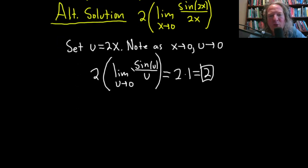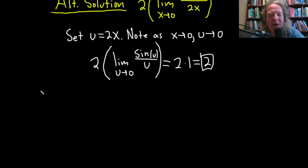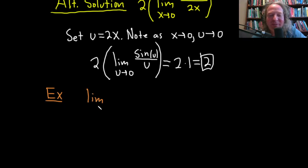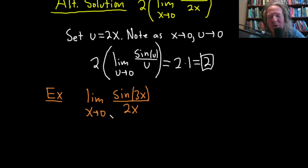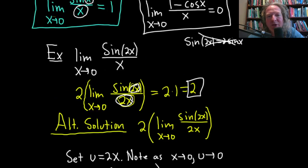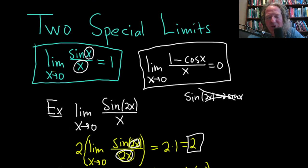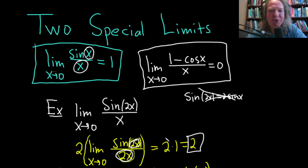Let's do another example. This time the limit as x approaches 0 of sine 3x over 2x. By the way, in all of these, the reason we have these special limits is because if you try to plug in 0 directly, it won't work. So we memorize these results and apply them to other problems.